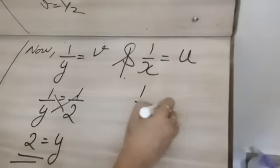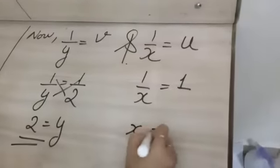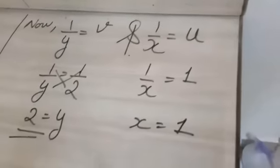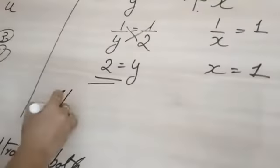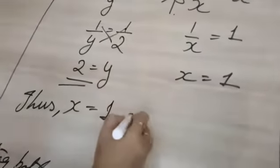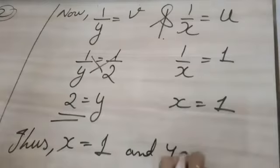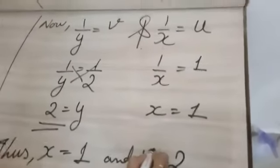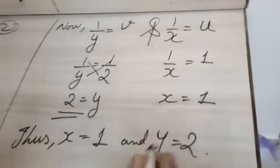And we also know that 1 upon x is equal to u, and 1 upon x is equal to 1. If you transpose, x will come equal to 1. Thus x is equal to 1 and y is equal to 2. Watch previous videos again if you have any doubt.